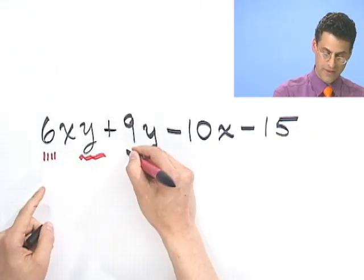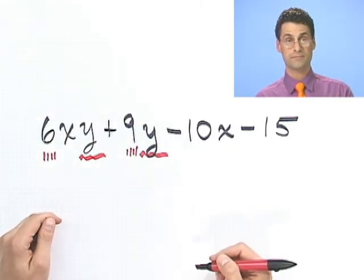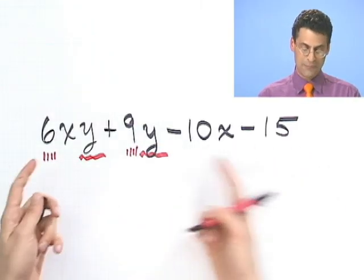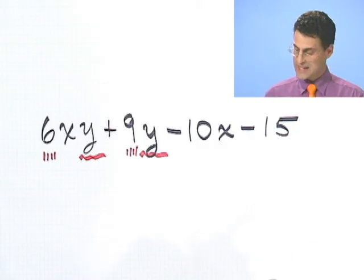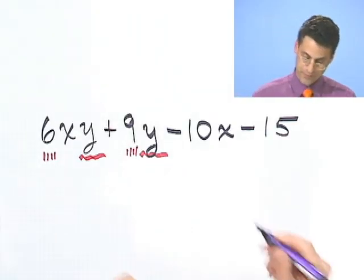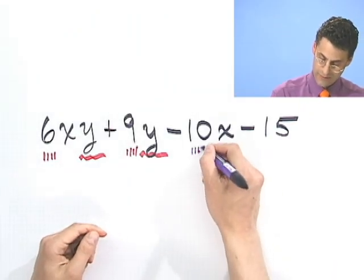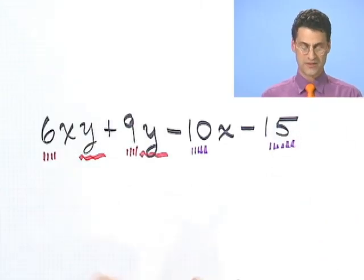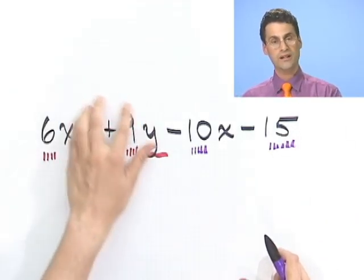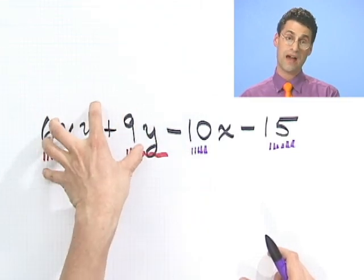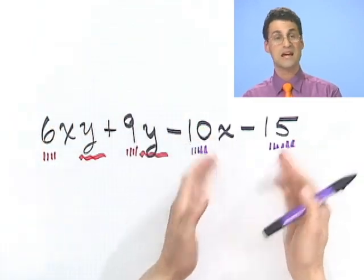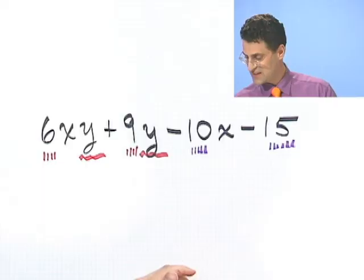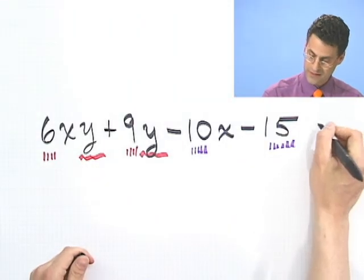But what about here? Well, I can't pull out those same things. But you notice I can pull out, if I wanted to, a 5 here and a 5 here. So the idea of grouping is to sort of take a piece of it and see what the greatest common factor is you can factor out of that piece, and then do the same thing in another piece, and then see what happens. The neat thing is that sometimes something really cool happens.